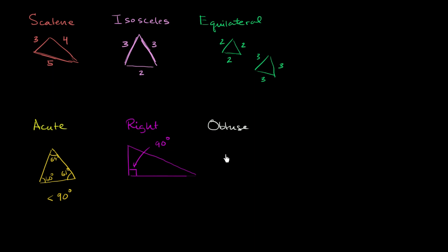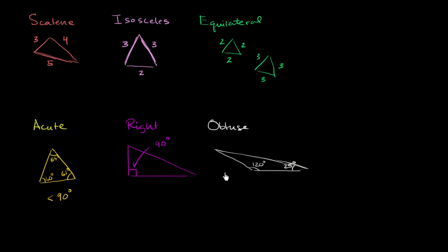An obtuse triangle, based on the idea that an obtuse angle is larger than 90 degrees, is a triangle that has one angle larger than 90 degrees. So let's say you have a triangle where one angle is 120 degrees, another is 35 degrees, and another is 25 degrees. Notice they still add up to 180 degrees — 25 plus 35 is 60, plus 120 is 180. The important point is that we have one angle greater than 90 degrees.